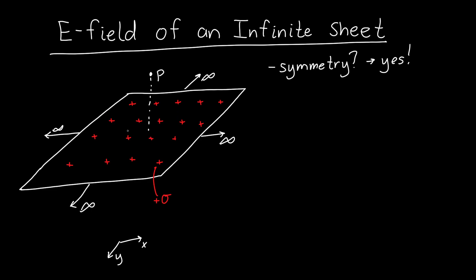All of the charge on the left-hand side will produce a little bit of electric field — say from this bit of charge here, a little bit from this bit of charge here — but the x-components from those pieces of charge will be cancelled out by the charge on the other side. So we're only going to be left with a vertical component, a z-component, to the electric field. This is my z-axis.